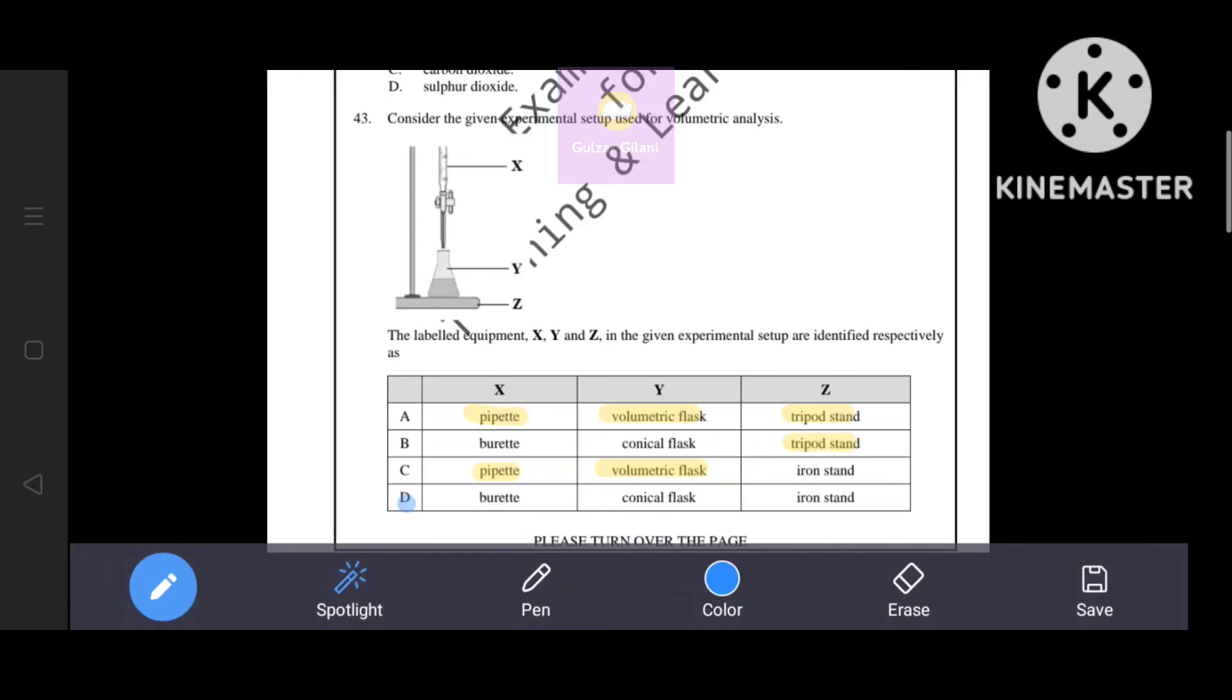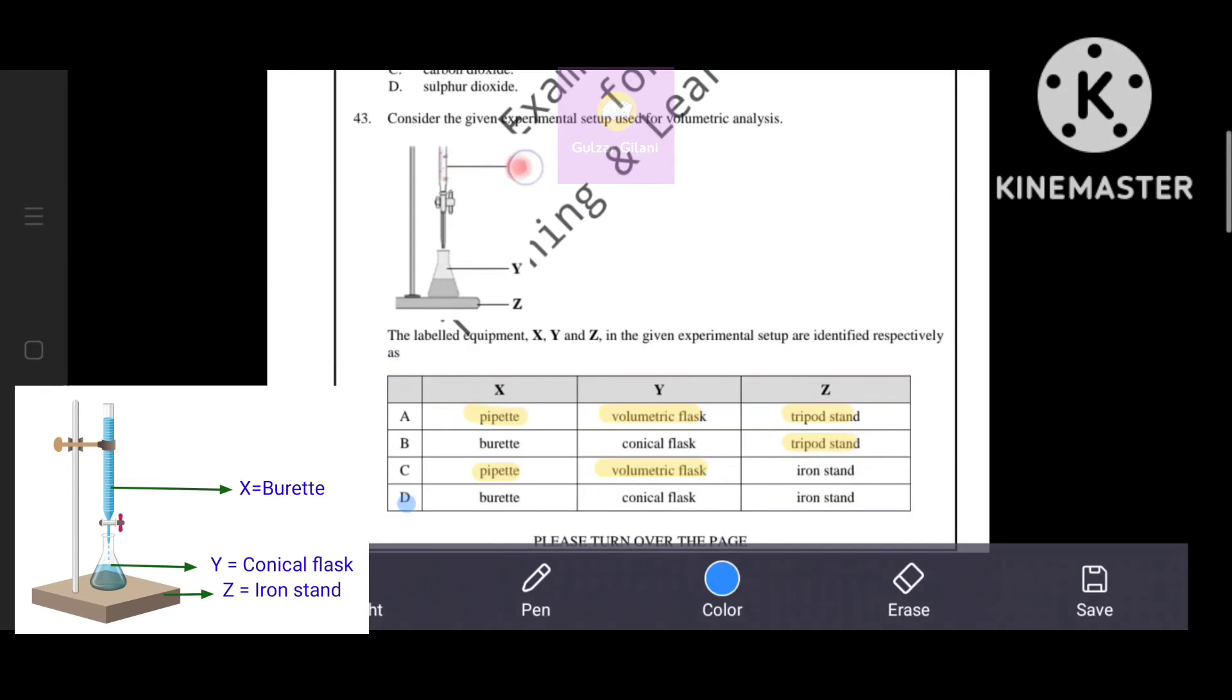Next question. Consider the given experimental setup used for volumetric analysis. The labeled equipment X, Y and Z in the given experimental setup are identified respectively as... X is burette, Y is conical flask, Z is iron stand. Option D, that's why D is the correct answer.